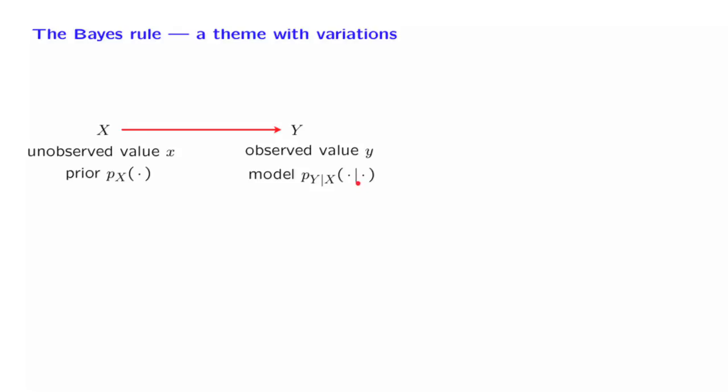Once we observe the value of Y, we obtain some information about X, and we use this information to make inferences about the likely values of X. Mathematically, instead of relying on the prior for X, we form some revised beliefs, that is, we form the conditional PDF of X, given the particular observation that we have seen. All this becomes possible because of the Bayes' rule.